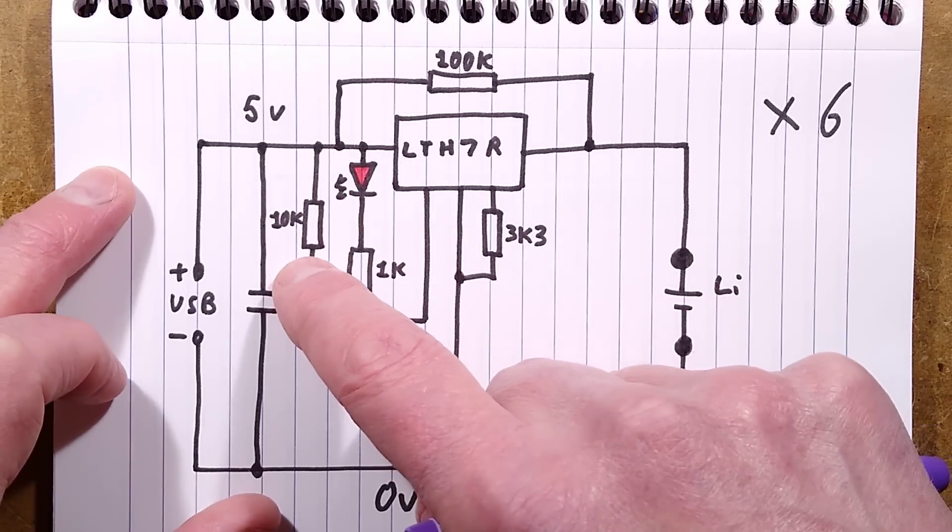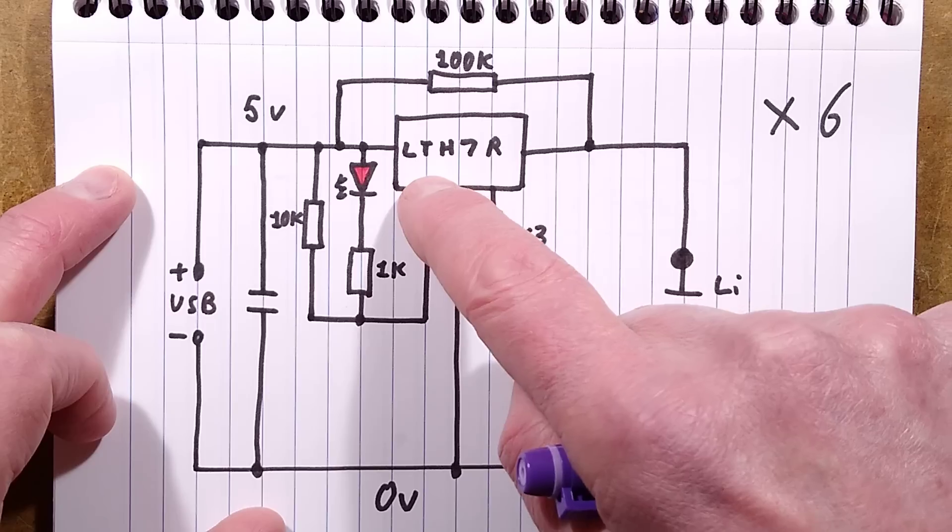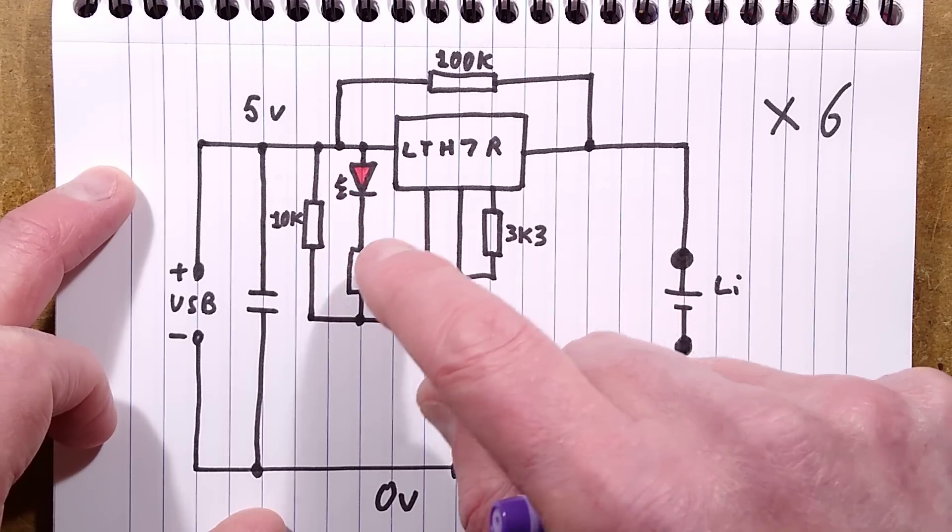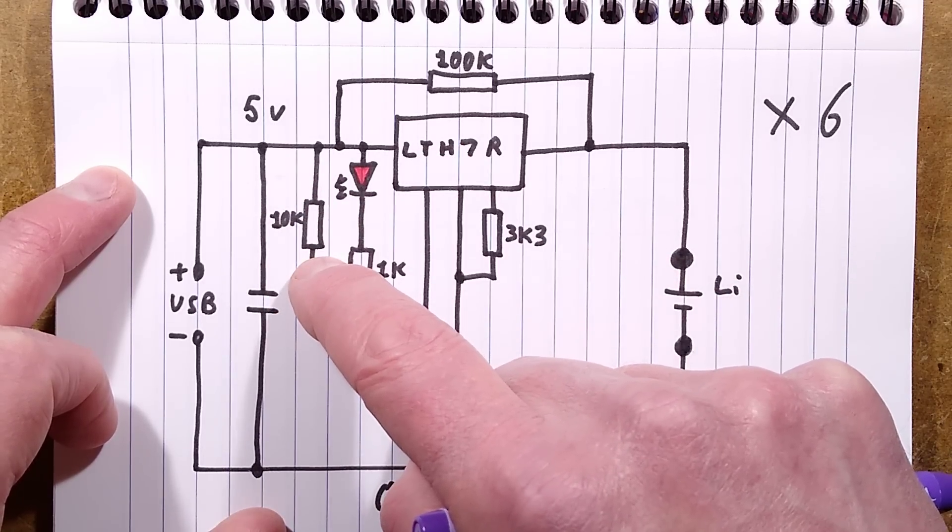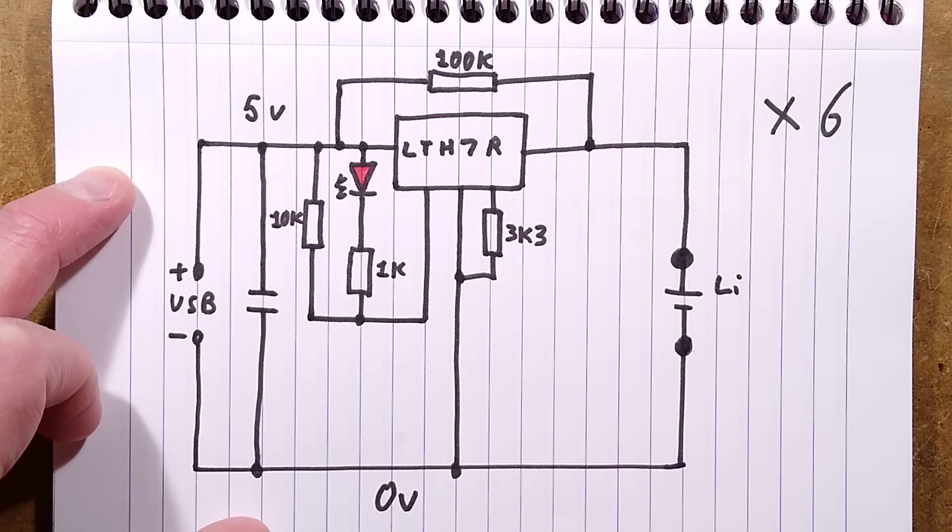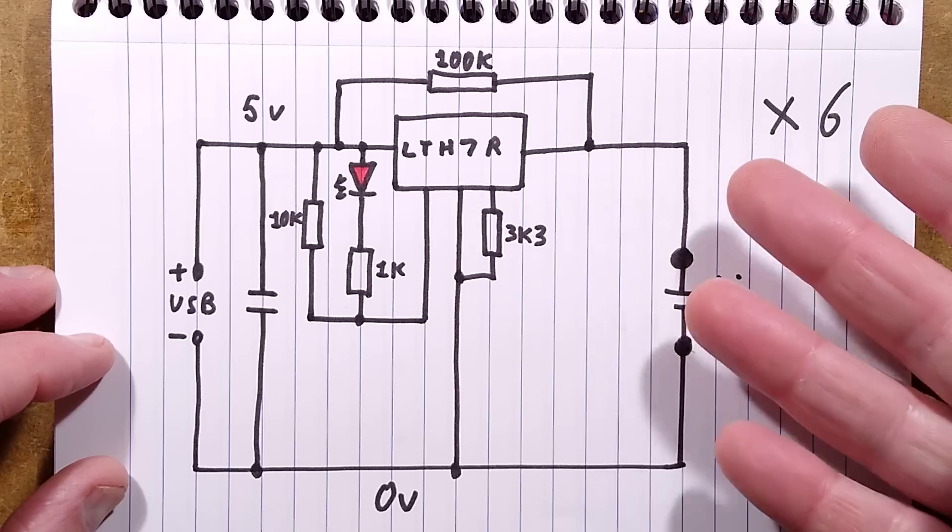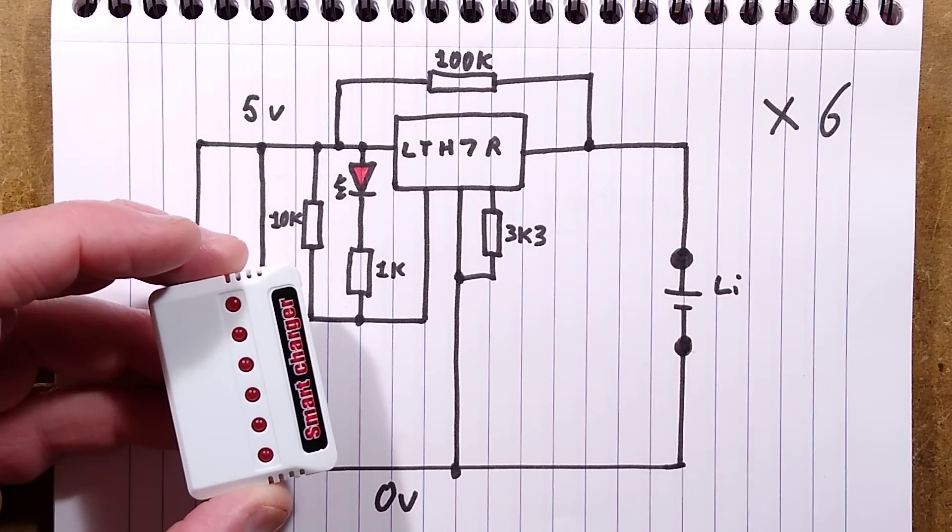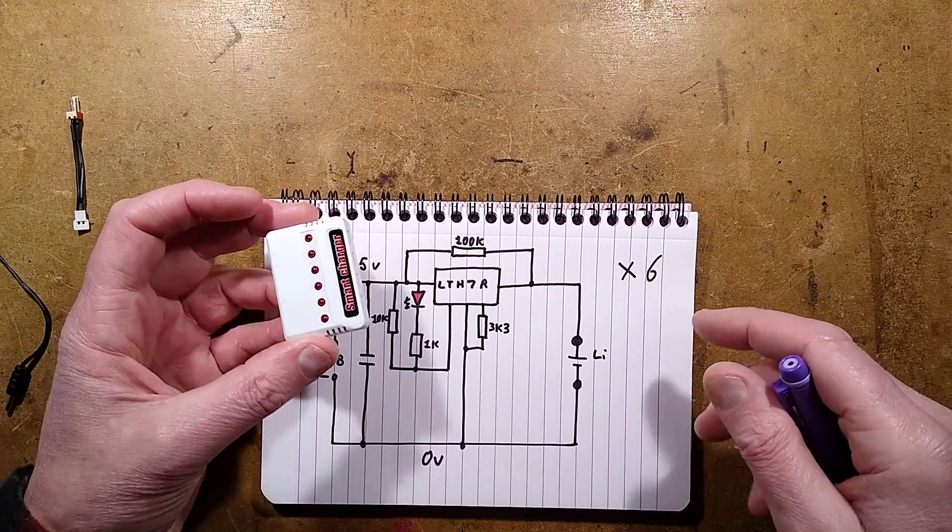And this 10K resistor here - normally there'd be an LED and resistor, and this output is just on or off depending on the charge state. I wonder if this is an attempt to fix that, that they don't really know what's happening in there, because it's not really going to do anything. I can't see any point in this 10K resistor at all. But that's it. It's fundamentally a very standard charge circuit. Quite useful. You've got six of them in this unit.